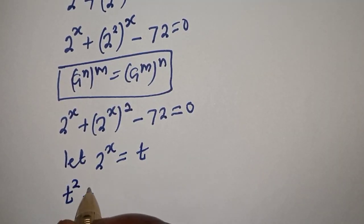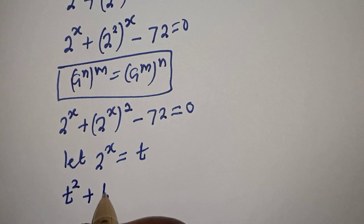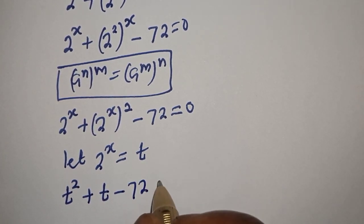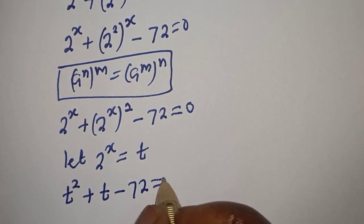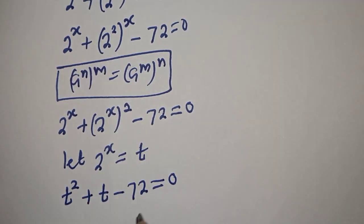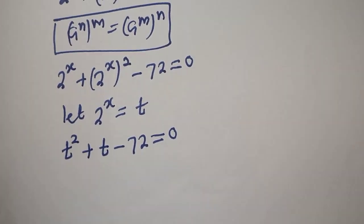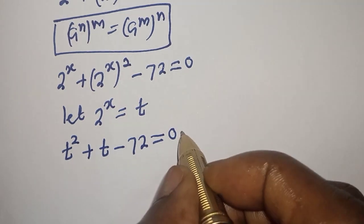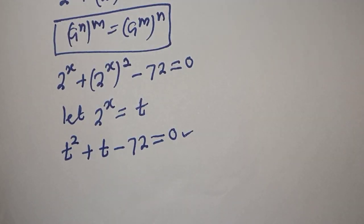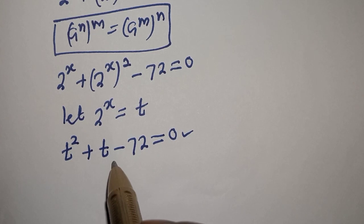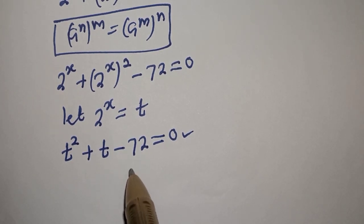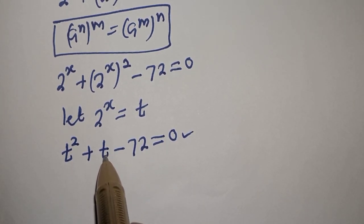This gives us t squared plus t minus 72 is equal to zero. If you rearrange this, this is a quadratic equation which can be solved using the factorization method. In the factorization method, the product must be equal to minus 72 and the sum must be equal to one.